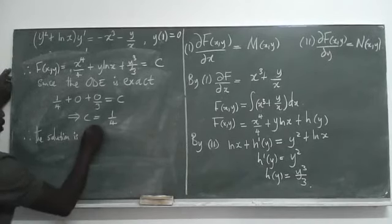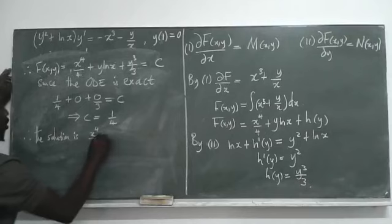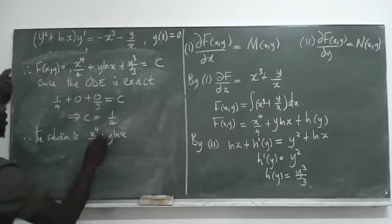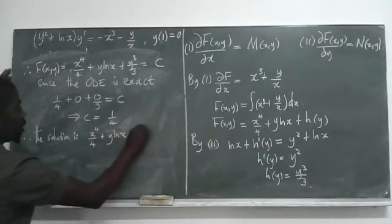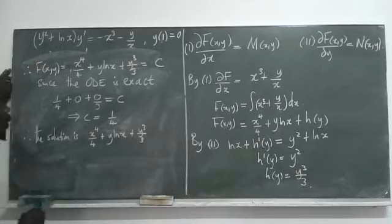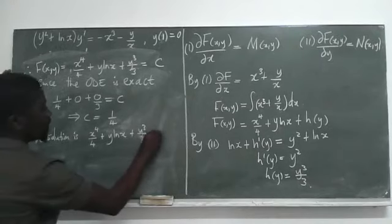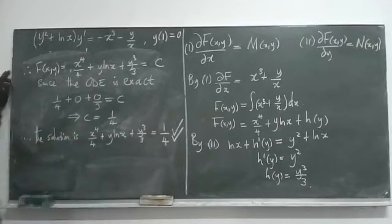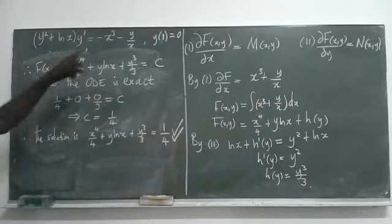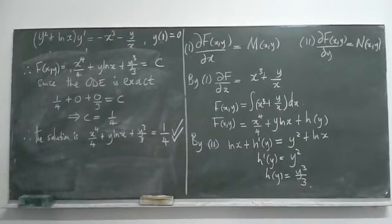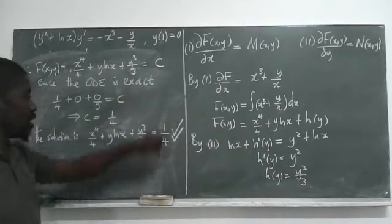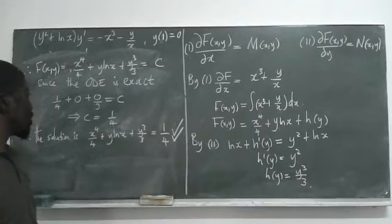Therefore the solution is x to the power 4 over 4 plus y times ln(x) plus y cubed over 3 equals one quarter. This is the answer for the given ODE. The initial condition helped us determine the constant C.